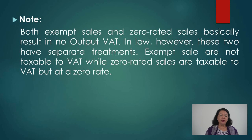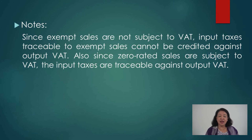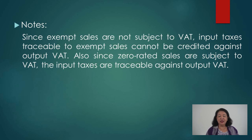Note that both exempt sales and zero-rated sales result in no output VAT — one because it is truly exempt, the other because the rate is zero. However, they have separate treatment: exempt sales are not taxable to VAT, while zero-rated sales are taxable to VAT at zero rate. Since exempt sales are not subject to VAT, input taxes traceable to exempt sales cannot be credited against output VAT. For zero-rated sales, being subject to VAT, the input taxes are traceable and creditable.